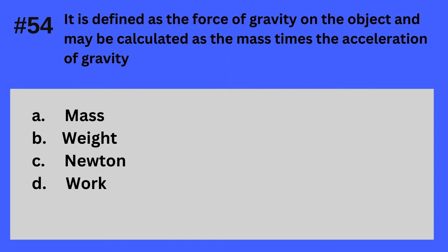Question 54. It is defined as the force of gravity on the object and may be calculated as the mass times the acceleration of gravity. A. Mass, B. Weight, C. Newton, D. Work. The answer is B — Weight. Note that weight equals mass times the acceleration of gravity.